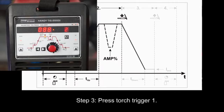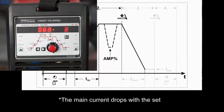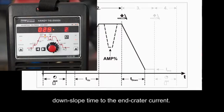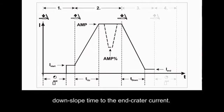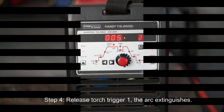Step 3. Press torch trigger 1. The mean current drops with set downslope time to the end crater current. Step 4.